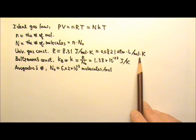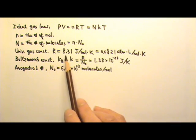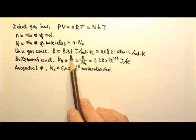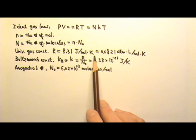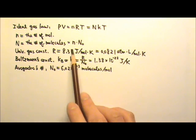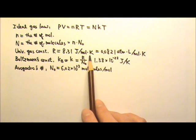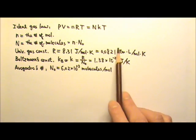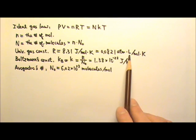But if we need the gas constant in standard unit in physics, we will have to use this one, 8.31 joules per mole Kelvin. Notice that the unit for R is energy per mole Kelvin. And for this one, the energy part is atmospheres times liters.